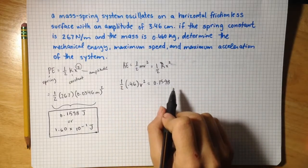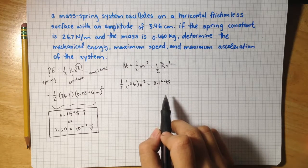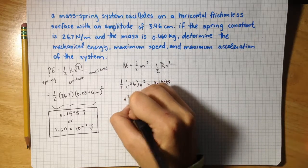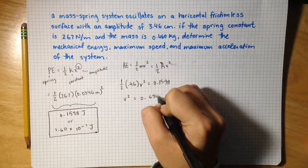So multiply this by 2, divide what you get by 0.46, and I get for v squared equals 0.6949.